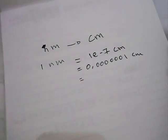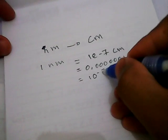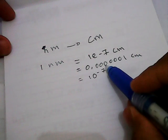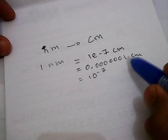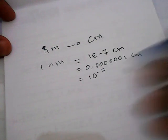Or another way, you can write 10 power minus 7. Because we have 1, 2, 3, 4, 5, 6, and 7 after the comma.